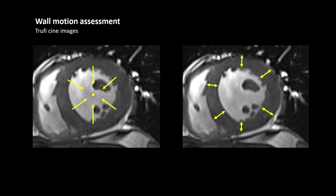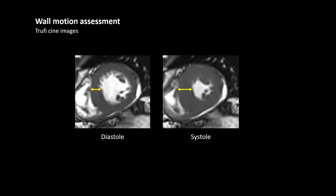There are basically two methods. First, keep your cursor in the middle and see how close each segment comes towards the cursor — if there is any wall motion abnormality, that segment won't come as near as the others. Alternatively, look for change in thickness of the myocardium: in diastole it is thin, and as it contracts the thickness should increase.